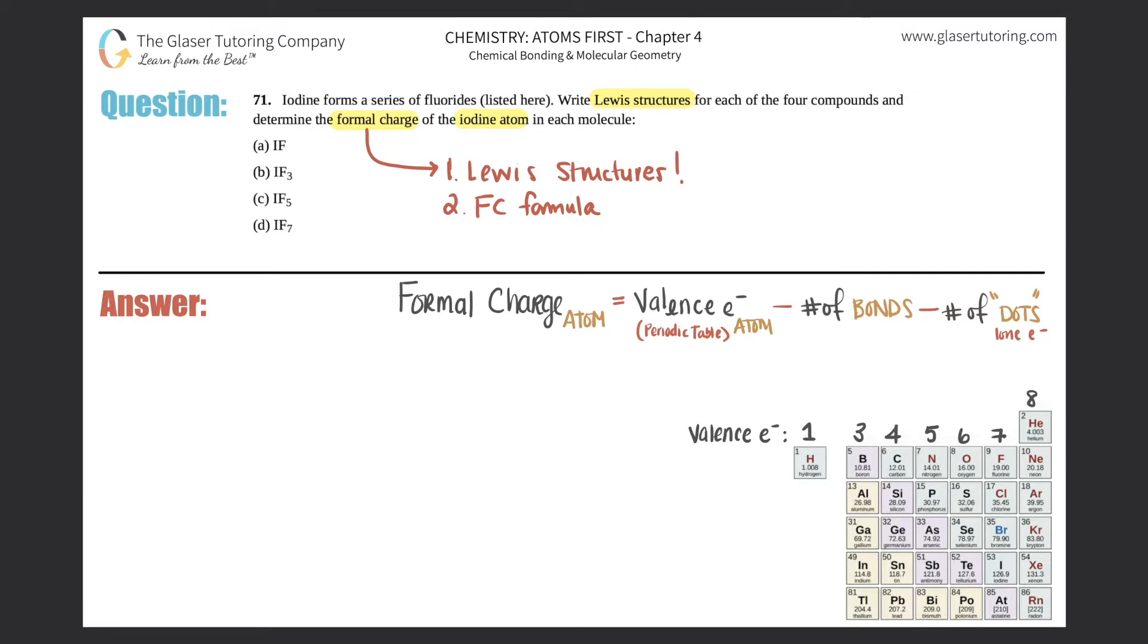So part (a), we have IF. You can pause the video if you want and try to do your own Lewis structure and see if it matches with mine. In this case, the Lewis structure is going to have an I single bound to an F, and each one of them will have three lone pairs just like that. Remember, you gotta go by the octet rule in this case, so each one should have eight electrons.